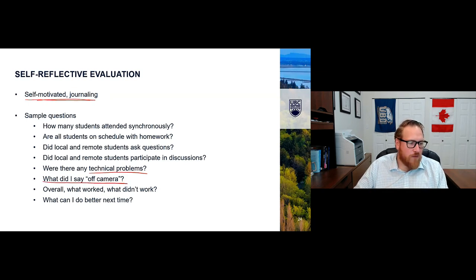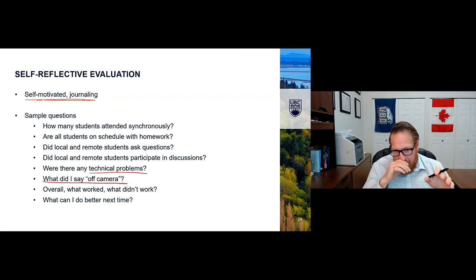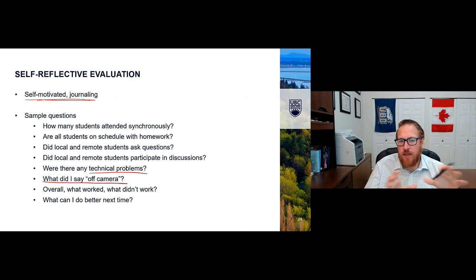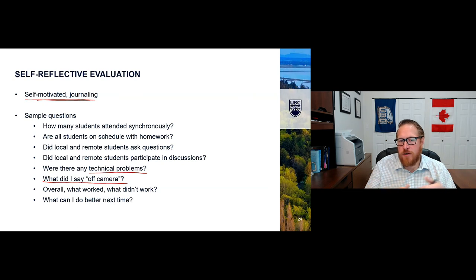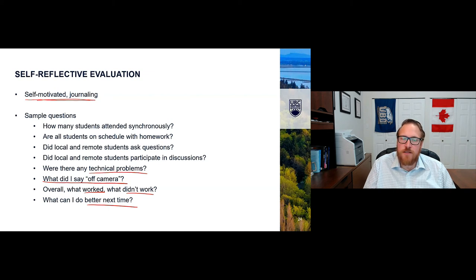Also: what did I say off camera? Typically, what did I say to the local cohort that the other cohort couldn't hear? It might not even be what was actually said — but what did students who were off camera think I said, or think I had an interaction about? That perception of missing an interaction can become important. And what worked, what didn't work — thinking about these things and preparing for the next session can be quite useful.